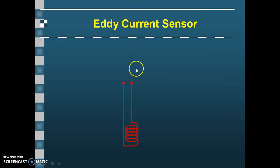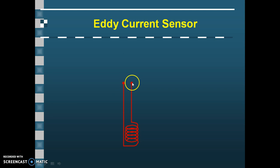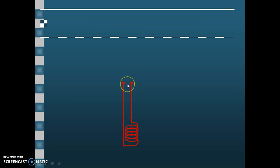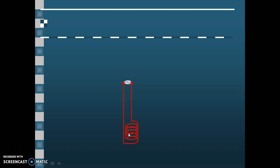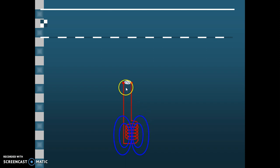The basic principle of the eddy current sensor is: here one coil is there, and across the two probes of the coil we apply an AC current source. As a result, the coil will produce an electromagnetic field across it. These blue circles are showing the generated electromagnetic field due to the alternating current applied at the two probes of the coil.